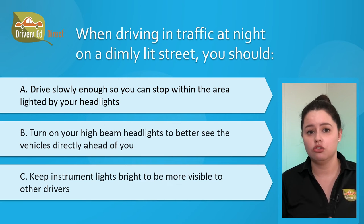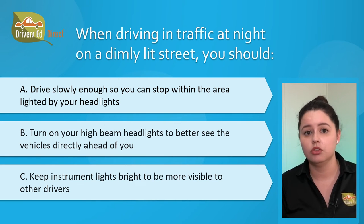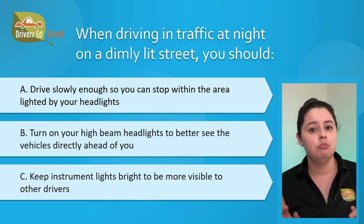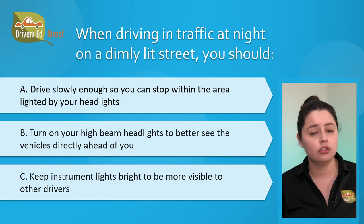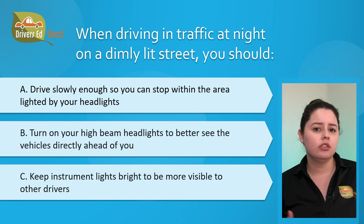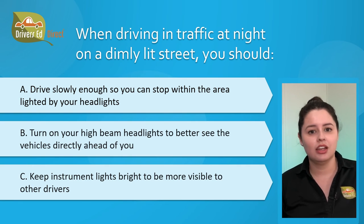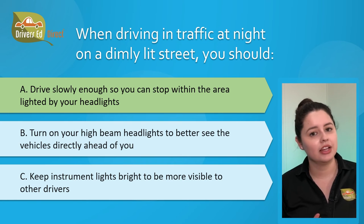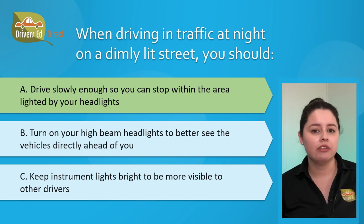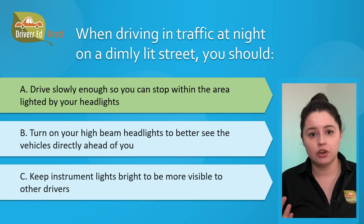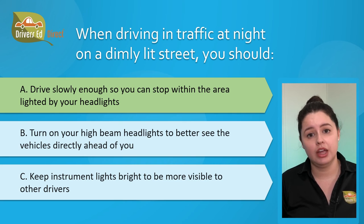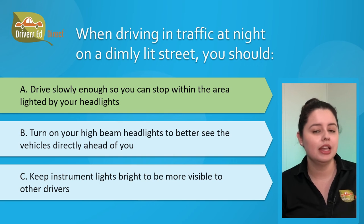Question number nineteen: when driving in traffic at night on a dimly lit street, you should: A) drive slowly enough so you can stop within the area lighted by your headlights, B) turn on your high beam headlights to better see vehicles directly ahead, or C) keep instrument lights bright to be more visible. The correct answer is A, drive slowly enough so you can stop within the area lighted by your headlights. Never drive so fast that you overdrive your headlights — at night your headlights won't illuminate far enough ahead to react in time.